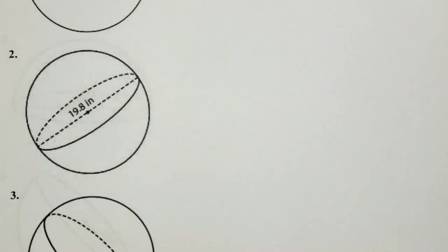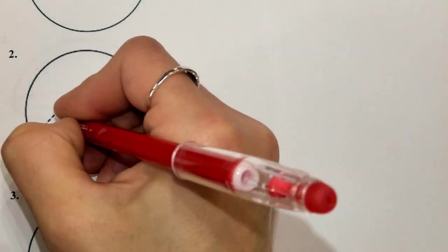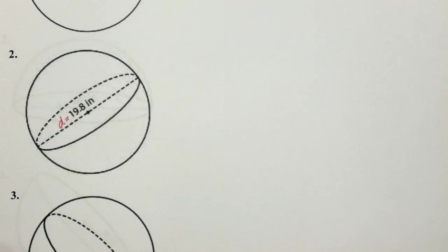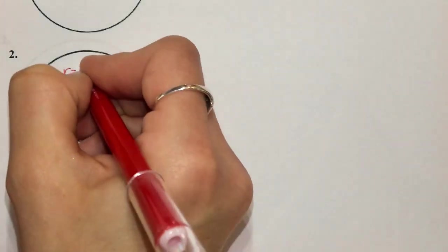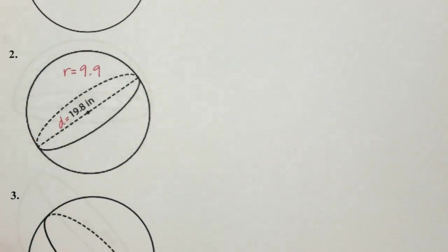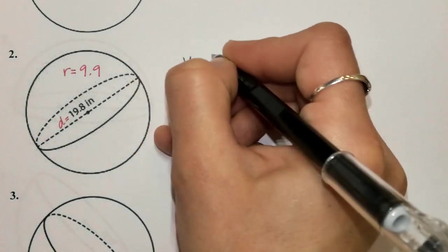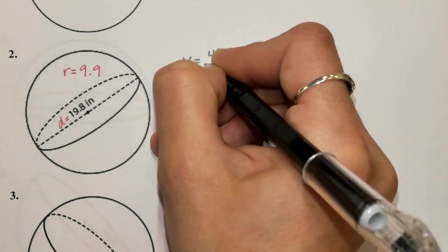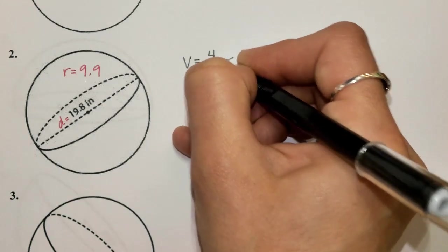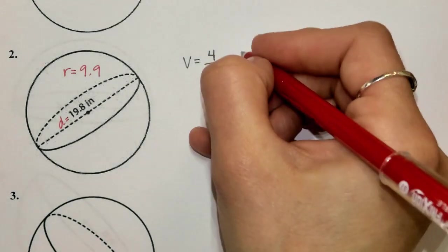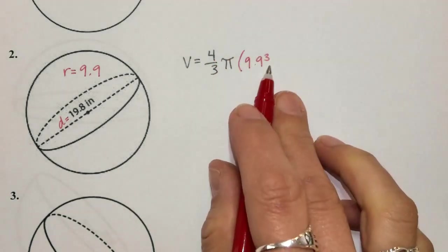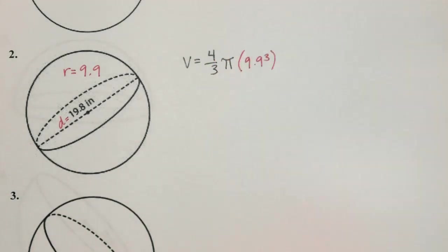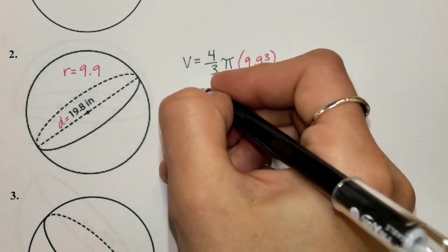On number two, we're given the diameter, not the radius. The radius will be half of the diameter, which gives us 9.9. So we'll use 9.9 in our formula: volume equals four-thirds pi times 9.9 cubed.